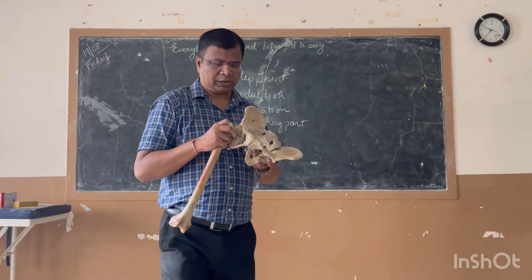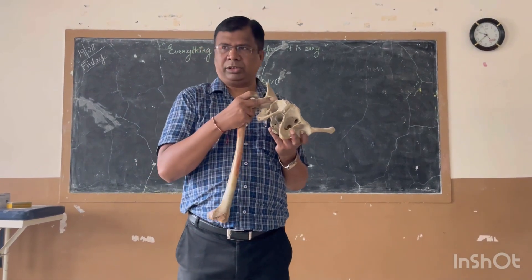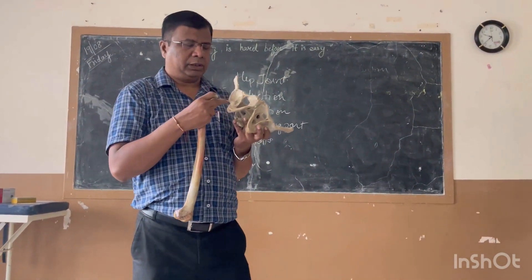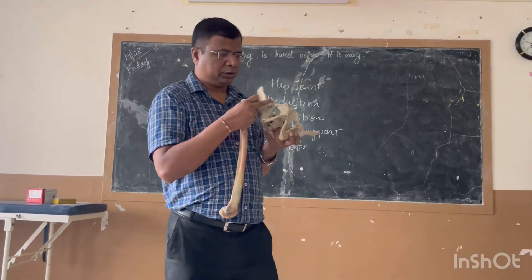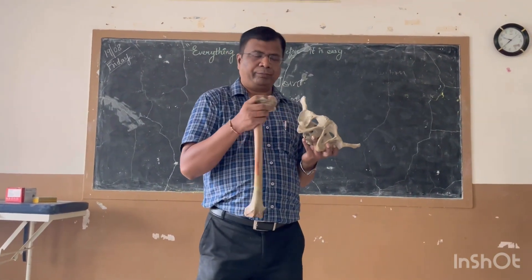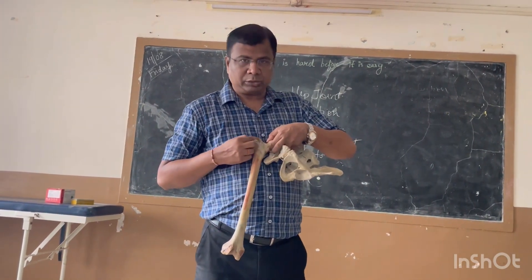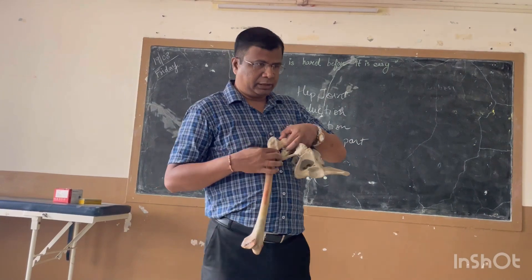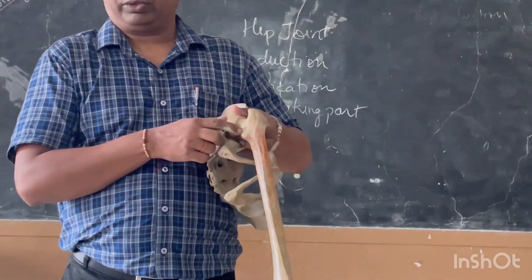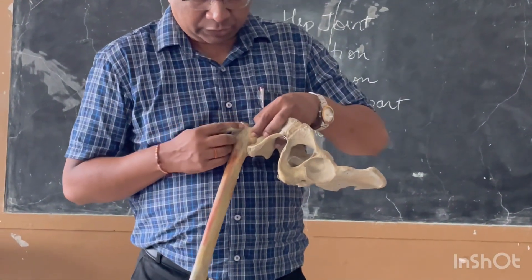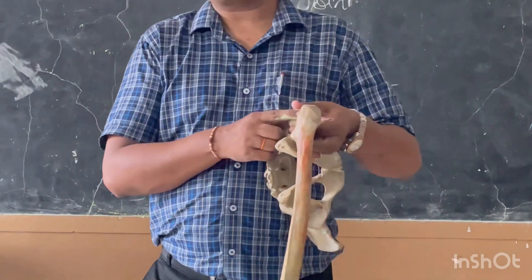The capsular ligament surrounds the acetabulum and also covers the transverse acetabular ligament. On the femoral side, the anterior attachment is to the intertrochanteric line, while posteriorly the capsule attaches about 1 cm in front of the intertrochanteric crest.